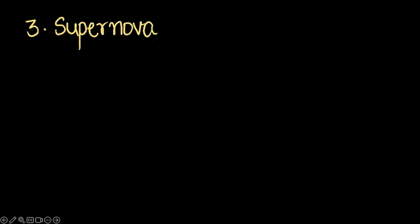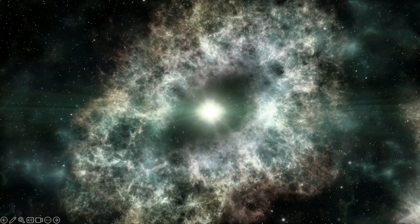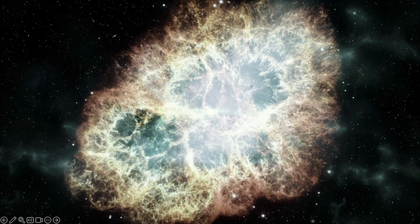The third type is the supernova. It's actually very rare to see a supernova. A supernova is what a star might go through just before its death — a huge explosion at that final stage. Let me show you a short animation: the star contracts, becomes smaller, and then boom — it explodes. That was a supernova explosion.